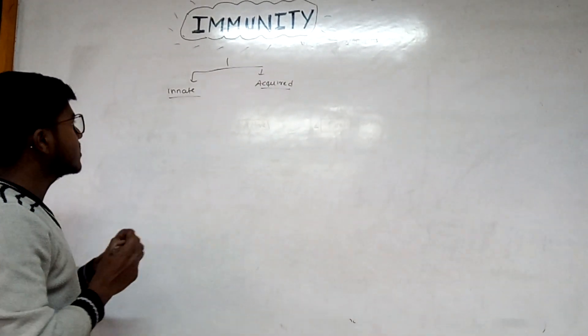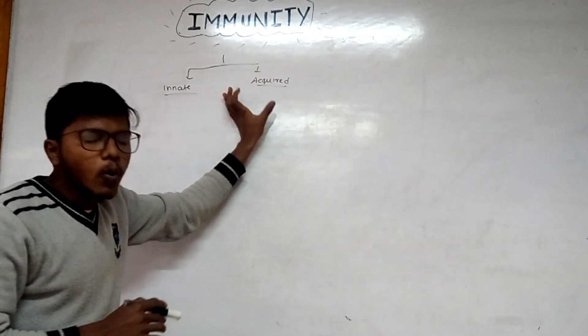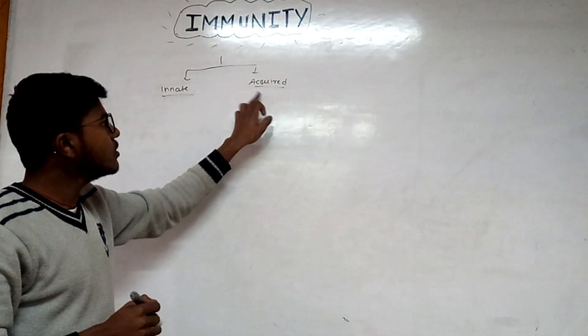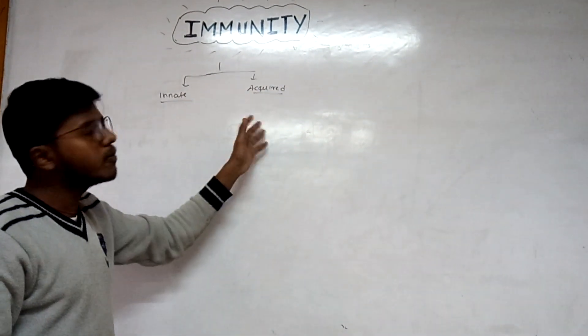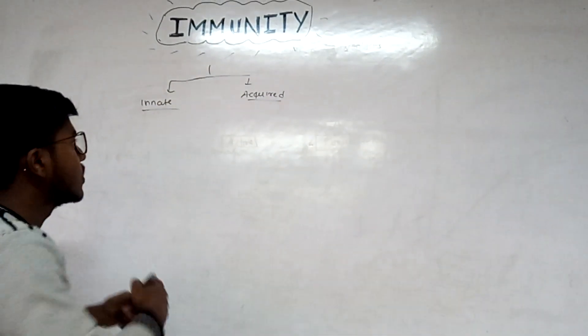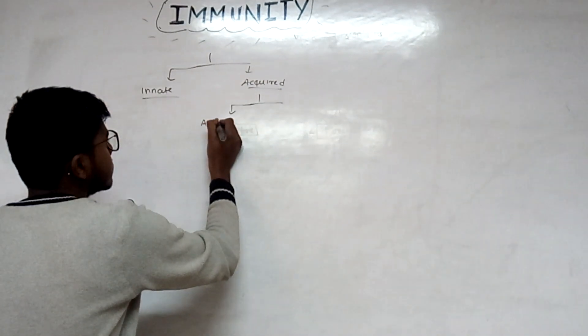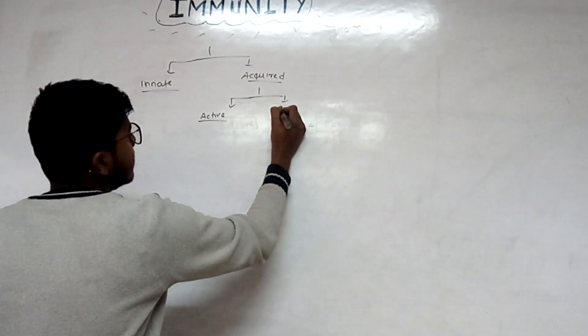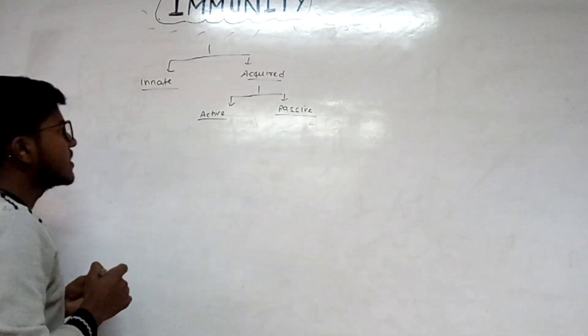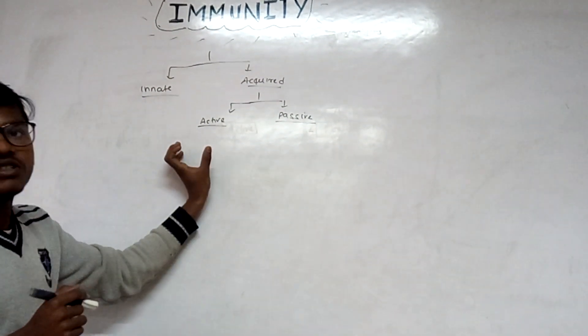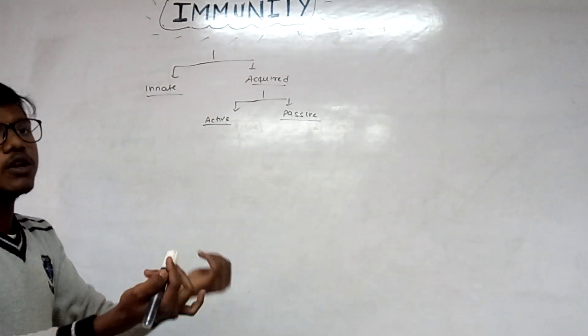Innate immunity, as the name suggests, is present at the time of birth. But today we will be focusing on acquired immunity - the immunity which we obtain during or acquire from outside, before birth and after birth. It is mainly of two types: active and passive immunity.